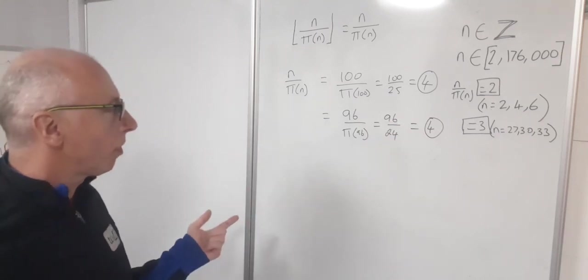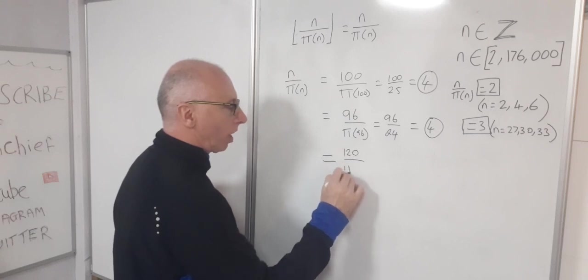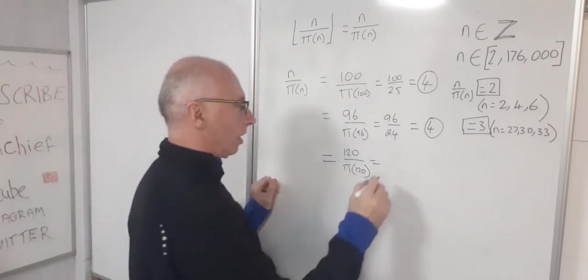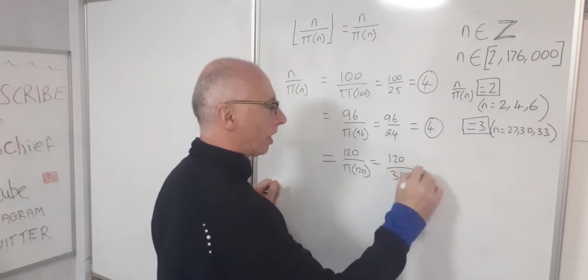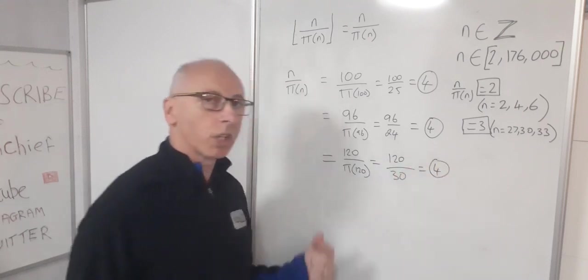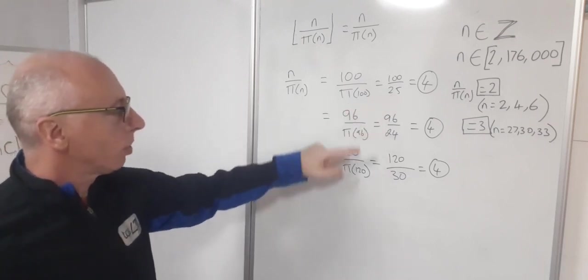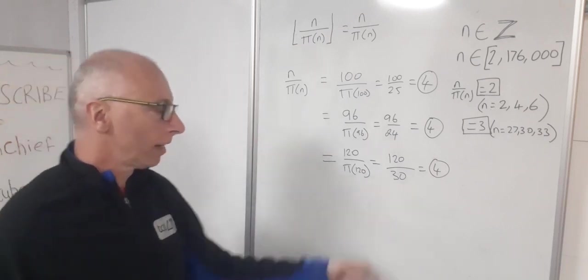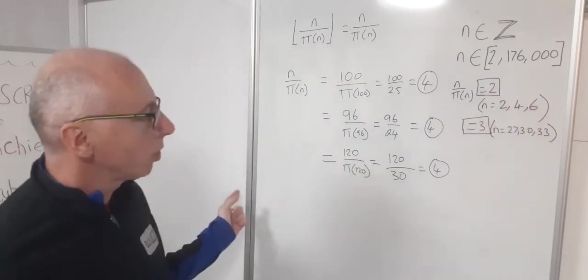So then moving forward from that, of course, 120 over pi of 120. So pi of 120 must be 30. So if that's 30 and we've got 120 over 30, that's going to give me 4. So we can just check that. So from 100 we've got 25. So between 200 and 120, there must be 5 prime numbers. So if you check that, that's what we will get. And then I went through again, all the way up to 76,000, no solutions, that gave me 4.